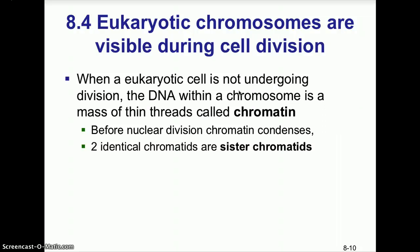When a eukaryotic cell is not dividing, the DNA within the chromosome exists as a mass of thin threads called chromatin — like spaghetti noodles in a bowl, with the nucleolus as the meatball in the center and the nucleoplasm as the sauce. Before nuclear division, chromatin condenses to form two identical sister chromatids.